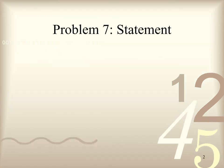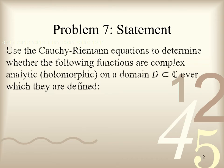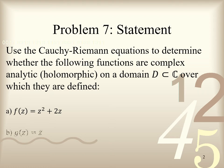Here is the statement of problem 7. Use the Cauchy-Riemann equations to determine whether the following functions are complex analytic, or holomorphic, on a domain D in the complex plane C over which they are defined. In part A, we have f of z equal to z squared plus 2z. In part B, we have g of z equal to the complex conjugation function z bar. Finally, in part C we have h of z equal to z times e to the z, where e to the z is the complex exponential function.